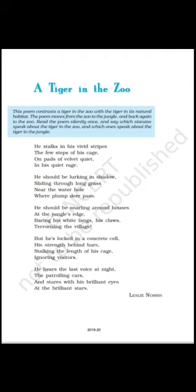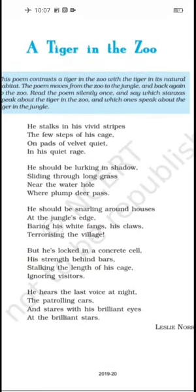Before starting the explanation stanza by stanza, here is a brief introduction of this poem. This poem contrasts a tiger in the zoo with the tiger in its natural habitat. It describes two situations of the tiger — firstly when it is trapped in a zoo, and then when it is free in its natural habitat, the forest. The poem moves from the zoo to the jungle and then again from the jungle to the zoo.